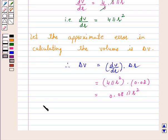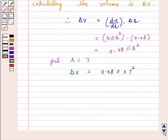Now, by putting r is equal to 7, which is the given radius, therefore delta V is equal to 0.08 pi into 7 square, and this is equal to 3.92 pi meter cube.